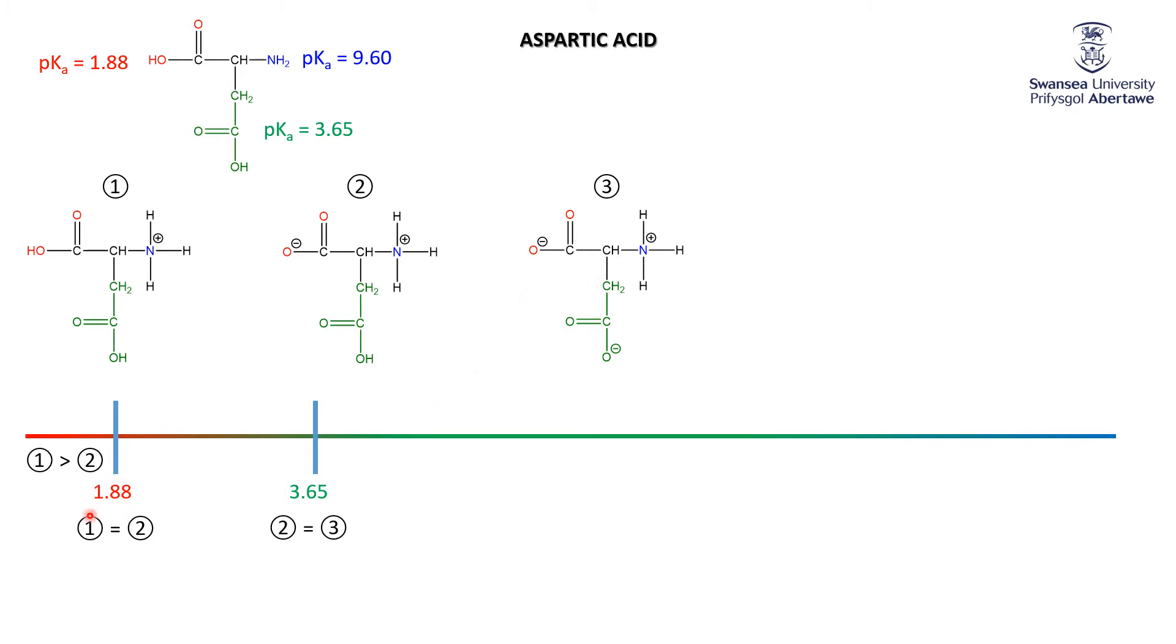At pH values between 1.88 and 3.65, we see structures 2 and 3. You've got hardly any one left at this stage as the amount of three increases. Then we've got what we saw before for glycine—